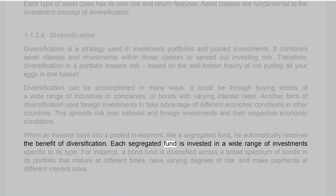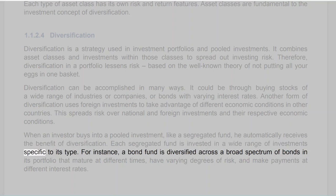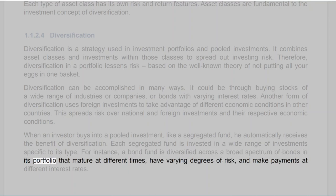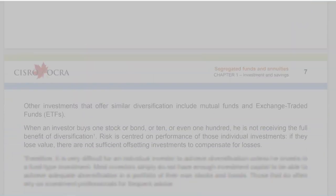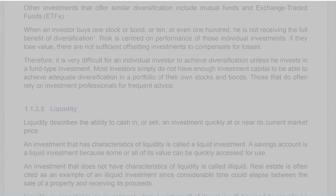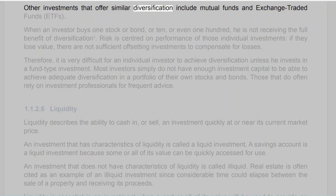When an investor buys into a pooled investment like a segregated fund, he automatically receives the benefit of diversification. Each segregated fund is invested in a wide range of investments specific to its type — for instance, a bond fund is diversified across a broad spectrum of bonds that mature at different times, have varying degrees of risk, and make payments at different interest rates. Other investments that offer similar diversification include mutual funds and exchange-traded funds (ETFs).